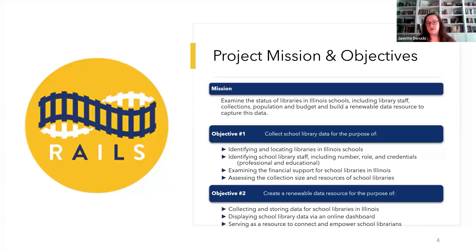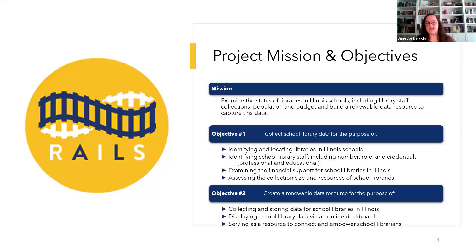The mission aligns with that of the Slide Project in that it aims to use data to explore the status of public and private school libraries, their staff, finances, and material resources. It also endeavors to build a renewable data resource to ensure its availability in the future. This is further broken down into two main objectives. Objective one specifically targets collecting data to locate school libraries, identify their staff, examine financial resources, and assess collections. The second objective states how the data will be used to create a sustainable data resource to be made available to the school library and education communities.